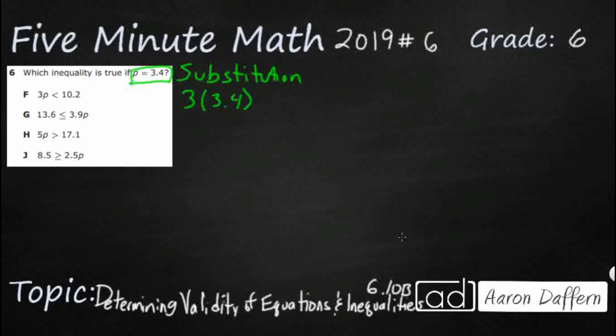So is 3 times 3.4 less than 10.2? That's our question. So let's just multiply that. 3.4 times 3. So that's 12. And that's, let's see, 10, 9, 10. So it's 102. Bring that decimal back in.